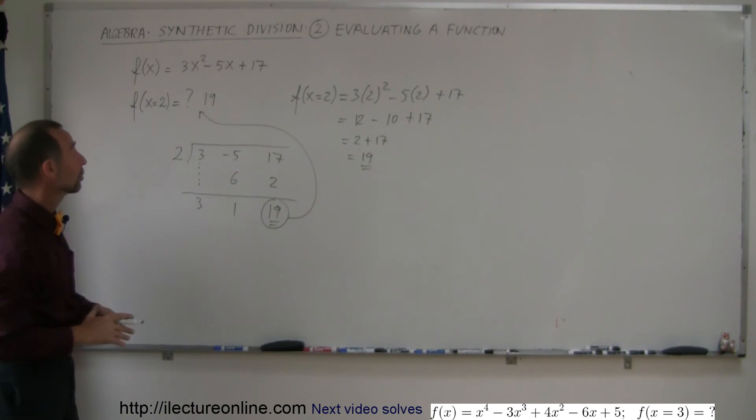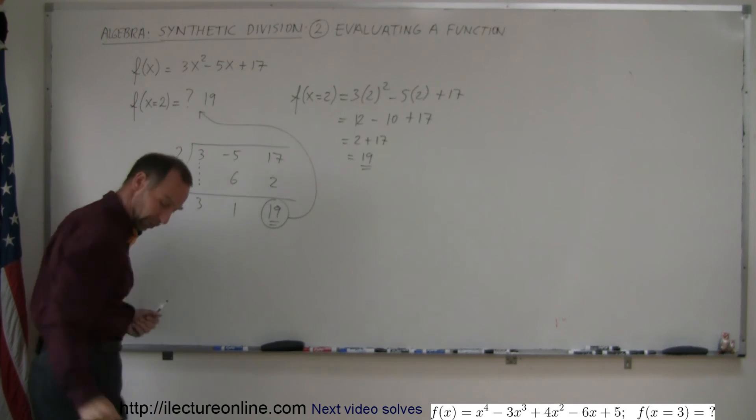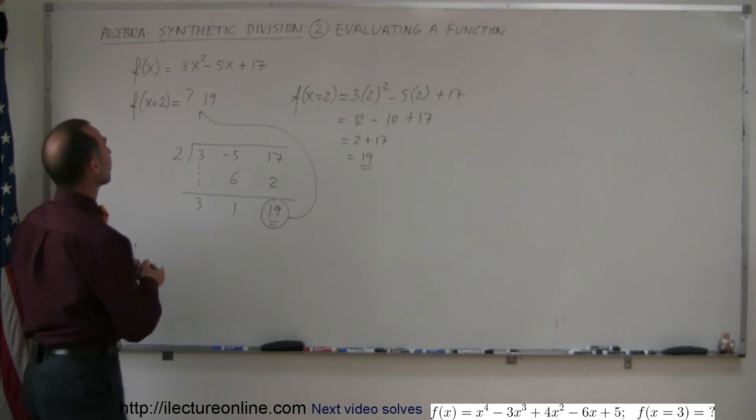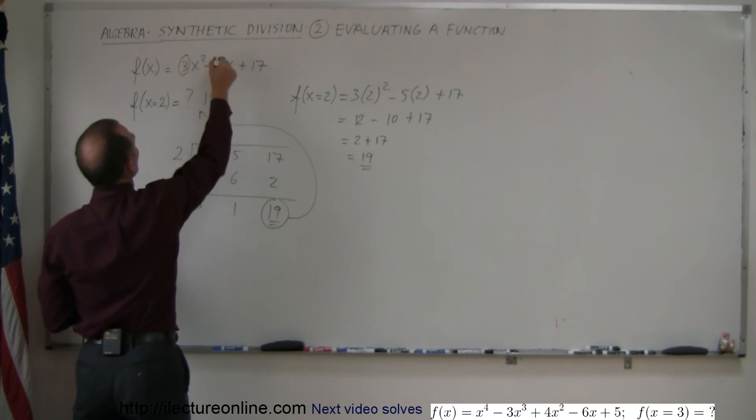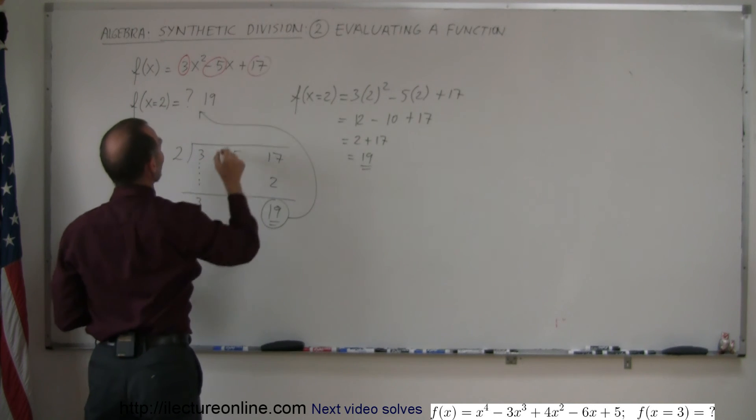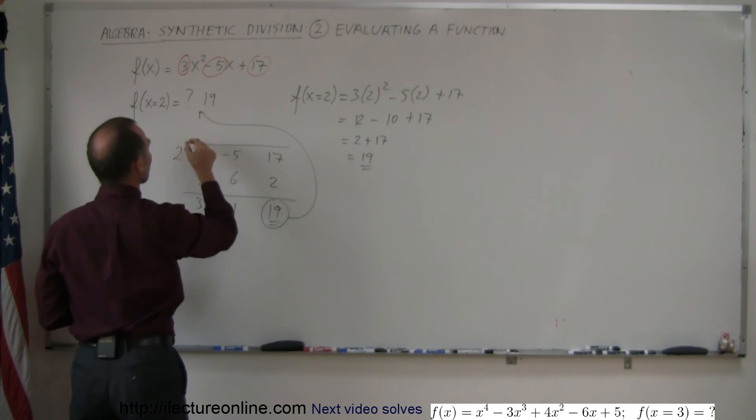See how that works? Again, this is how we do it. We take the coefficients - in review: take the coefficients 3, -5, and 17, and place them over here. Then put a division sign there.